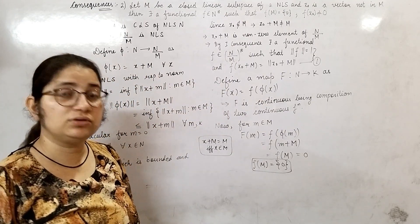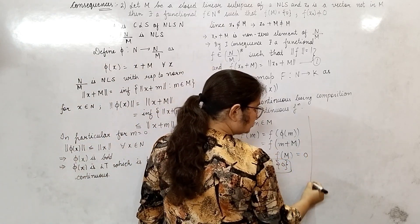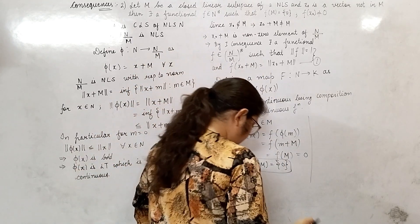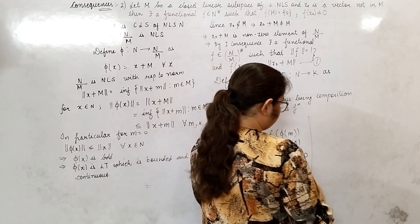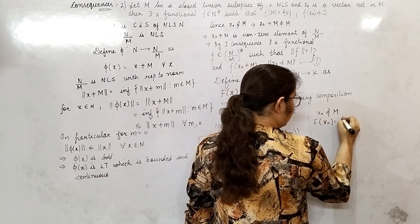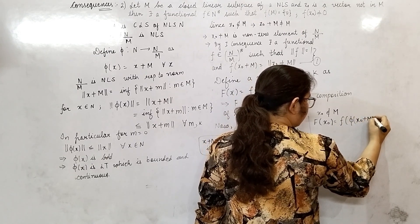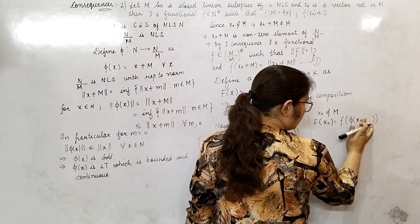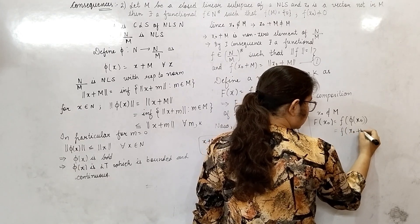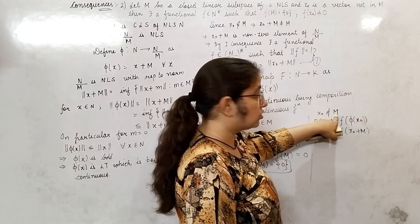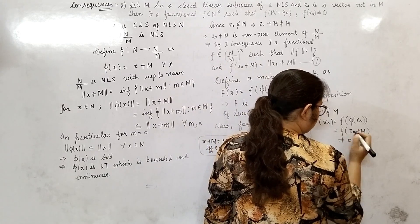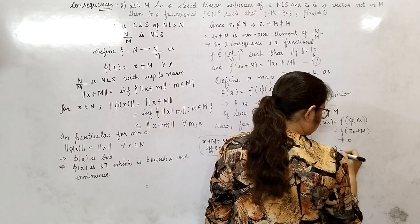Now the next thing to show is that F of x₀ is non-zero. Since x₀ does not belong to M, x₀ plus M is not the zero element of N/M, so it is non-zero. Therefore F of x₀ equals f of φ of x₀ equals f of x₀ plus M, which is non-zero. So F of x₀ is non-zero. This completes the proof.